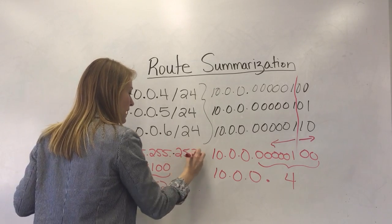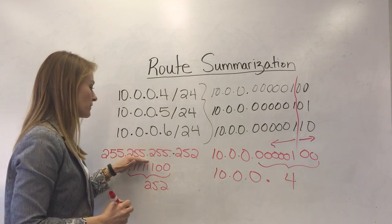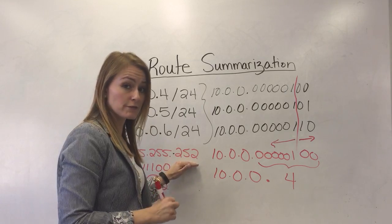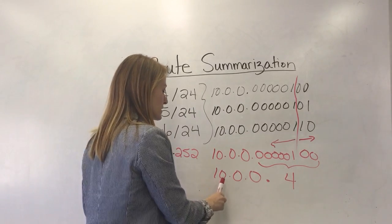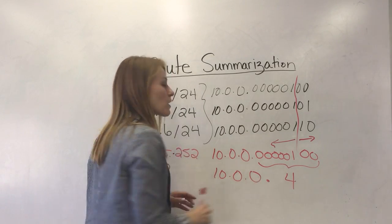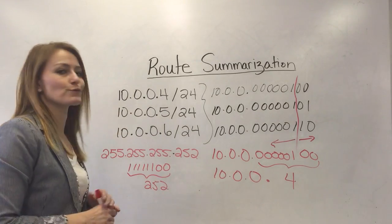So our subnet mask is 255.255.255.252 with our IP address of 10.0.0.4 to summarize these three routes.